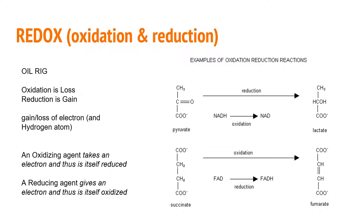In another example, succinate undergoes oxidation: each carbon had two hydrogens, and now they each have one, forming a double bond between them — they each lost a hydrogen and an electron. FAD is reduced because it gained the electron and the hydrogen atom. This is a bit tricky, so read the section in the book and talk yourself through it out loud, making sure you understand where the electron is going.